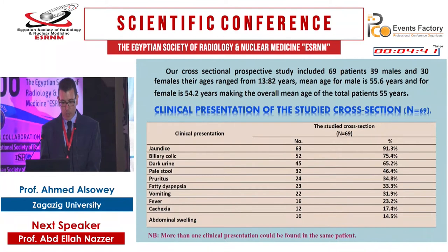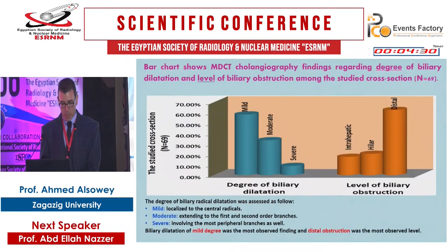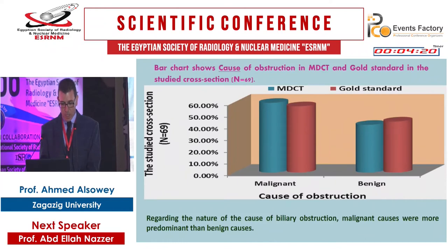Our cross-sectional prospective study included 69 patients. More than one clinical presentation was found in the same patient. The most affected age group was 60 to less than 70 years. Mild degree biliary dilatation was the most observed finding, while distal obstruction was the most observed level.